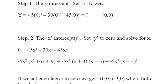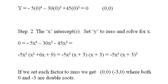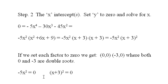And I set each factor to zero: negative 5x squared equals zero and x plus 3 squared equals zero. Of course zero will make this zero, and if I put a negative 3 in here it'll make it zero. So those are the two x-intercepts, two places where the graph hits the x-axis.